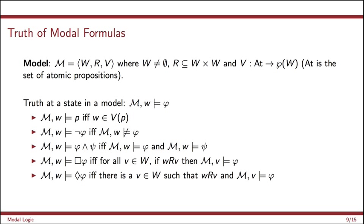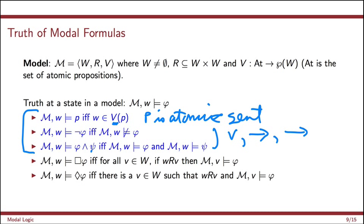Truth is defined as follows. So if we write M, W models phi, that means that phi is true at state W in this model. The Boolean connectives are interpreted as you expect. So if P is an atomic sentence, so assume here P is an atomic sentence, then P is going to be true at state W just in case the valuation says it is, just in case W is an element of V of P. Not phi is true at W just in case phi actually isn't true at W. And conjunction phi and psi is true just in case both phi and psi are true. The remaining Boolean connectives disjunction and implication and if and only if are going to be defined as usual.